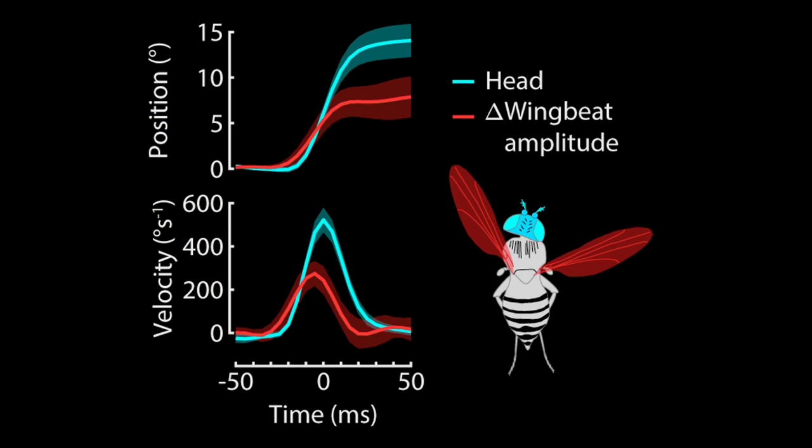To uncover the underlying mechanism triggering head reset saccades, we began to look at the coupling of head and wing movements in flies. We found that head and wing reset saccades were triggered near simultaneously, with the wings leading the head by 6 milliseconds.